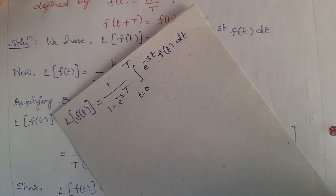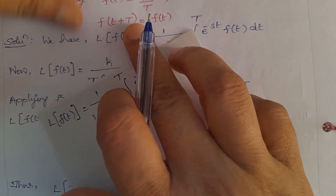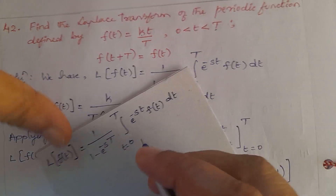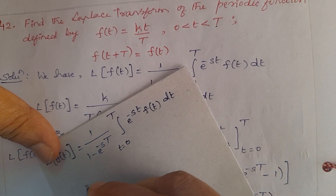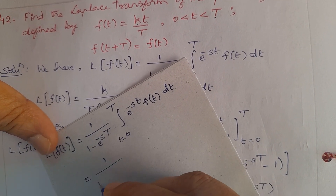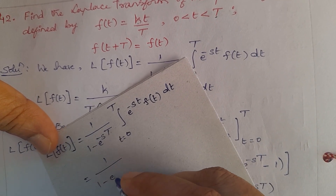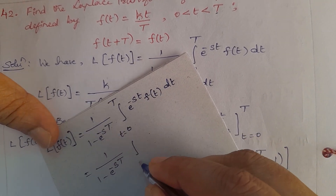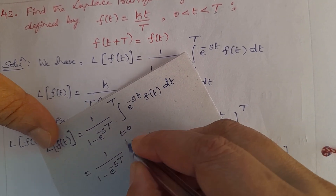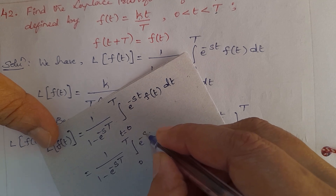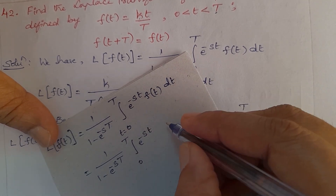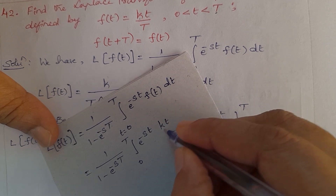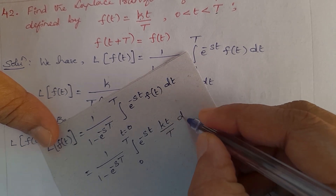Now substitute the value of f(t) = k·t/T into the formula: 1/(1 - e^(-sT)) · integral from 0 to T of e^(-st) · (k·t/T) dt.